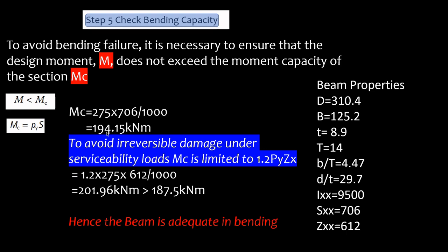There's also an additional check that's provided under BS 5950. It says to avoid irreversible damage under the serviceability loads, MC is limited to 1.2×PY×ZX where ZX is the elastic section modulus. So ZX for this beam was 612, so if you calculate that you get 201.96 kN·m which is much greater than 187.5.